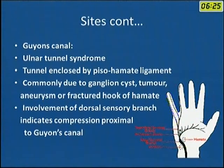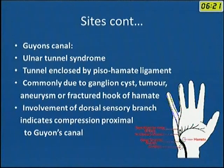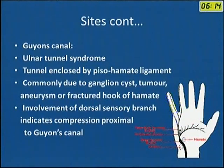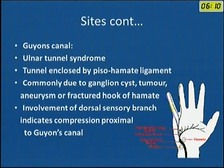Guyon's canal is the most important point, where ulnar nerve tunnel syndrome and pisohamate ligament concussion occur. The most common causes in Guyon's canal are ganglion, cyst, tumour, aneurysm, and fracture of the hook of the hamate.